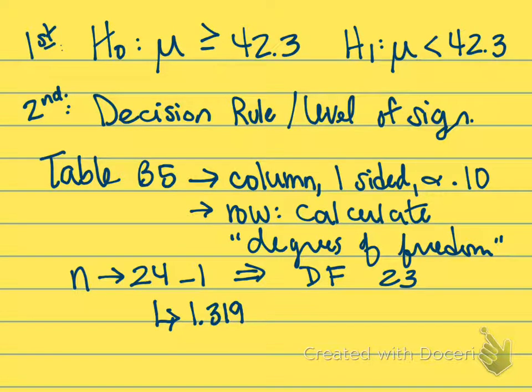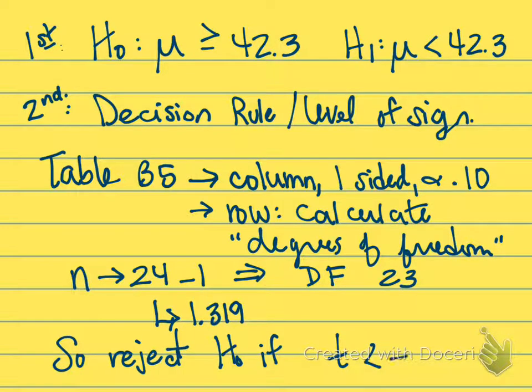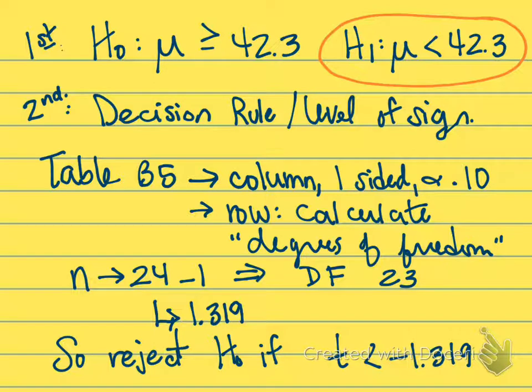So then what is our decision rule? We will reject the null hypothesis if the t value, which is what we're about to calculate, is less than negative 1.319. Because, going back up to the hypothesis that we're testing, that alternate hypothesis is what's going to happen if the value is less than the current population mean of 42.3. So our rejection region is going to be the lower region or the left-sided tail.